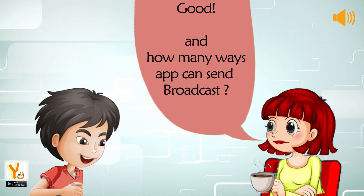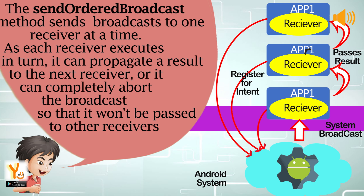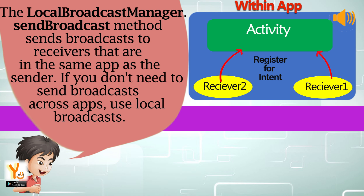The interviewer asked: How many ways can an app send a broadcast? Raj replied: Android provides three ways for apps to send broadcasts. First, sendOrderedBroadcast sends broadcasts to one receiver at a time — as each receiver executes in turn, it can propagate a result to the next receiver or completely abort the broadcast. Second, sendBroadcast sends broadcasts to all receivers in an undefined order. Third, LocalBroadcastManager's sendBroadcast sends broadcasts to receivers in the same app as the sender — if you don't need to send broadcasts across apps, use local broadcasts.